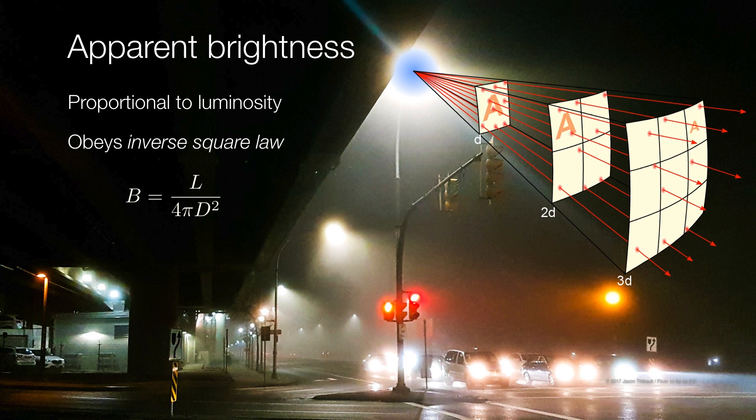But it goes as the distance squared. So if you are at twice the original distance, now the brightness is one-fourth its original brightness. At three times the distance, it's at one-ninth the original brightness, and so on.